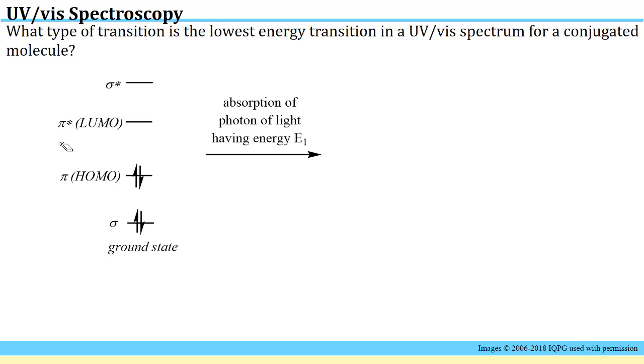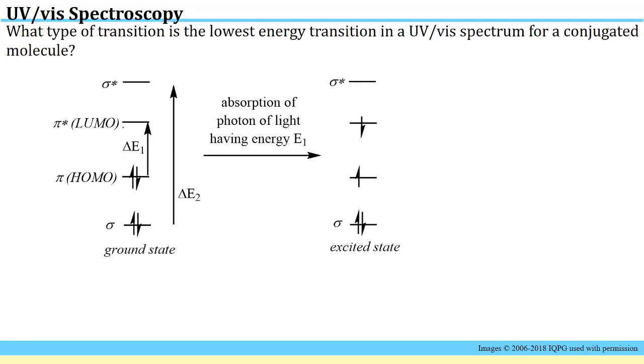You'll also notice these abbreviations HOMO and LUMO. These refer to the highest occupied molecular orbital, meaning the molecular orbital that has electrons in it at the highest energy, and the lowest unoccupied molecular orbital, the lowest energy state that's available to hold electrons that is empty. In the primer we learned that the two allowed types of transitions in these simple organic molecules are from the pi to the pi star orbital or from the sigma to the sigma star orbital.